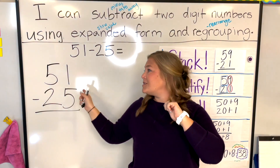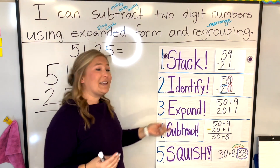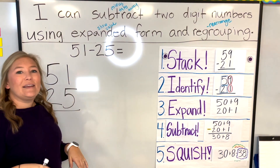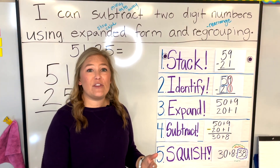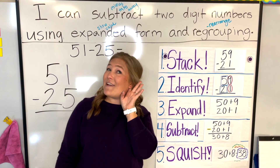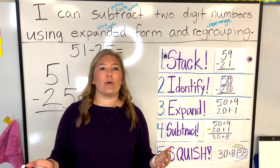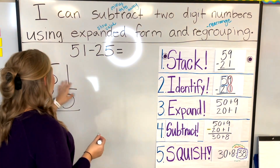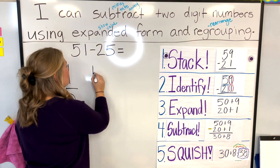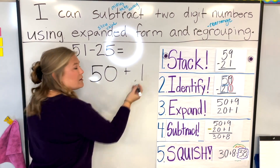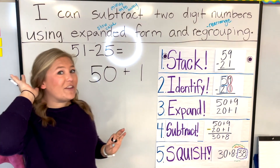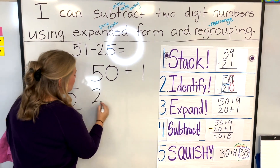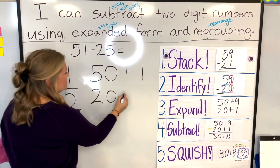We're taking out that identifying step because now we're really good at place value. Our next step is expanding. We have the number 51 — when we say 51, we're hearing the value of the number. So in expanded form, 51 is five tens, or 50, plus one. The next one is 25 — I hear the value: 25 is two tens, or 20, plus five ones.